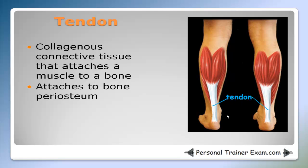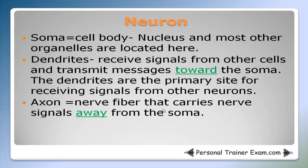Next is a brief review of the structures that make up a neuron. A neuron is composed of a soma, also called the cell body, which contains the nucleus and most other organelles. A neuron contains dendrites, which receive signals from other cells and transmit those messages toward the soma — dendrites are the primary site for receiving signals from other neurons. The axon, also called the nerve fiber, carries nerve signals away from the soma. Associate the A in axon with 'away' to remember this.